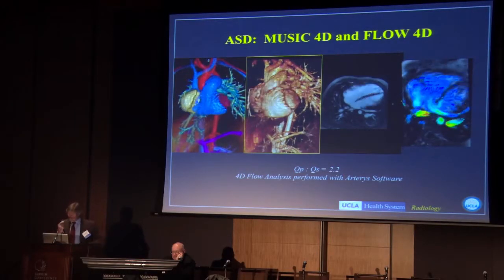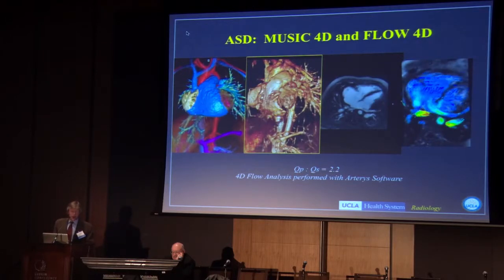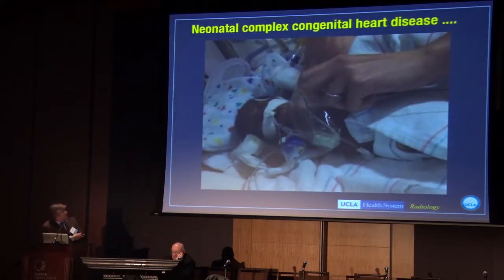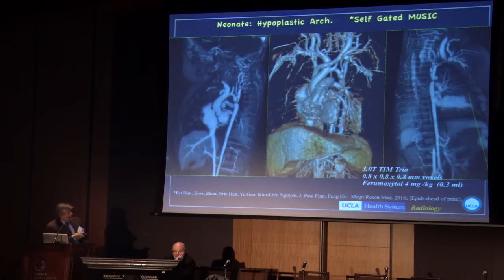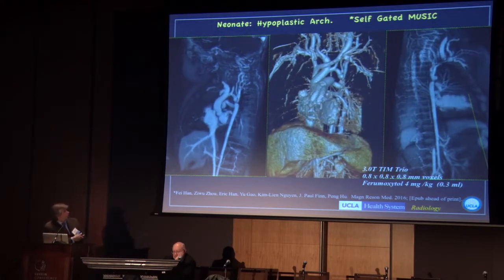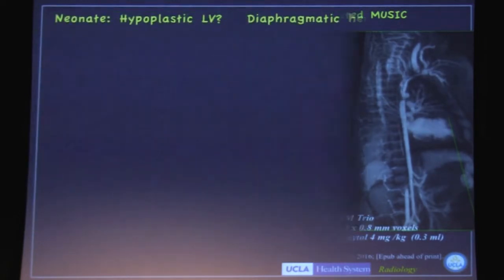We measured a QP/QS of 2.2 in this patient, and this is done during continuous ventilation with no breath holding — the whole thing can be done quite quickly. This tiny baby had coarctation and a hypoplastic arch. This was done with a self-gated version of MUSIC, developed by Fay Han, who developed the original MUSIC sequence. We've got lots of detail — 0.8 millimeter isotropic resolution, which for MRI is actually pretty good.